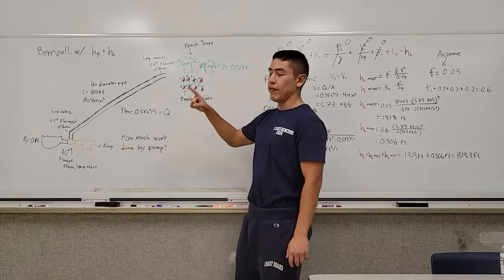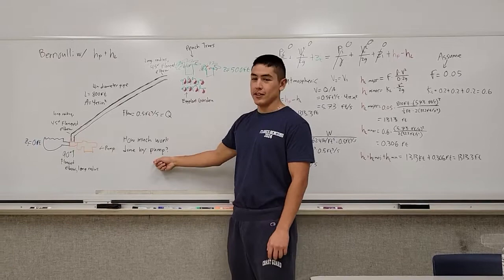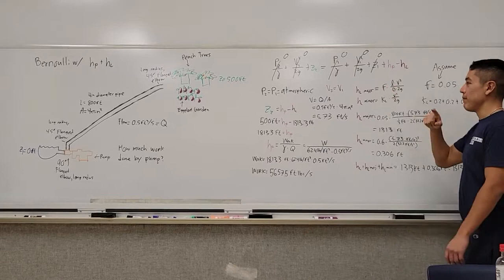245, 190 degrees, and our flow is going to be 0.5 feet cubed per second. We're trying to figure out how much work is done by the pump to get that water up to the garden.